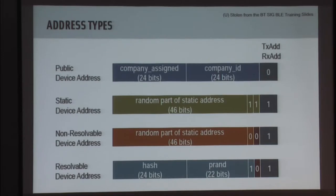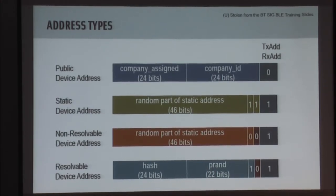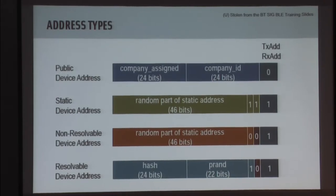Resolvable device addresses are more interesting because they are intended to rotate periodically. When you connect two devices for the first time, the resolvable address is created by swapping keys between the two devices. When your central wants to find a particular device it looks at all devices with a resolvable address and calculates a hash of the PRAND part - the random number - that hash is then concatenated with the random number, giving you the address you connect to, essentially saying 'this is a device I know about.'